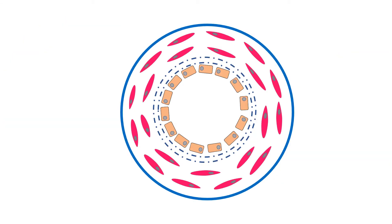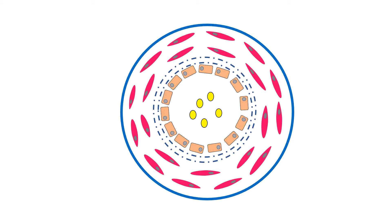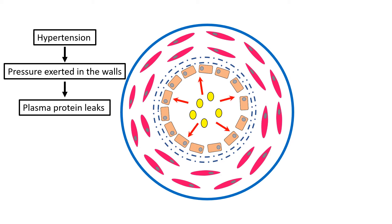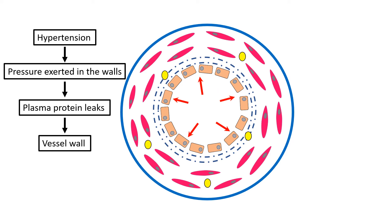Blood vessels contain plasma proteins as part of the components of blood. Normally, these plasma proteins stay within the lumen and do not leak out into the vessel wall. In hypertension, high pressure is exerted on the vessel walls. When the pressure increase is moderate over a long duration, as in chronic hypertension, the integrity of the intima of the arterioles is damaged, causing plasma proteins to leak into the subendothelial layer and the media. This is usually not seen in large arteries, as they can withstand increased pressure by expanding due to their elasticity.